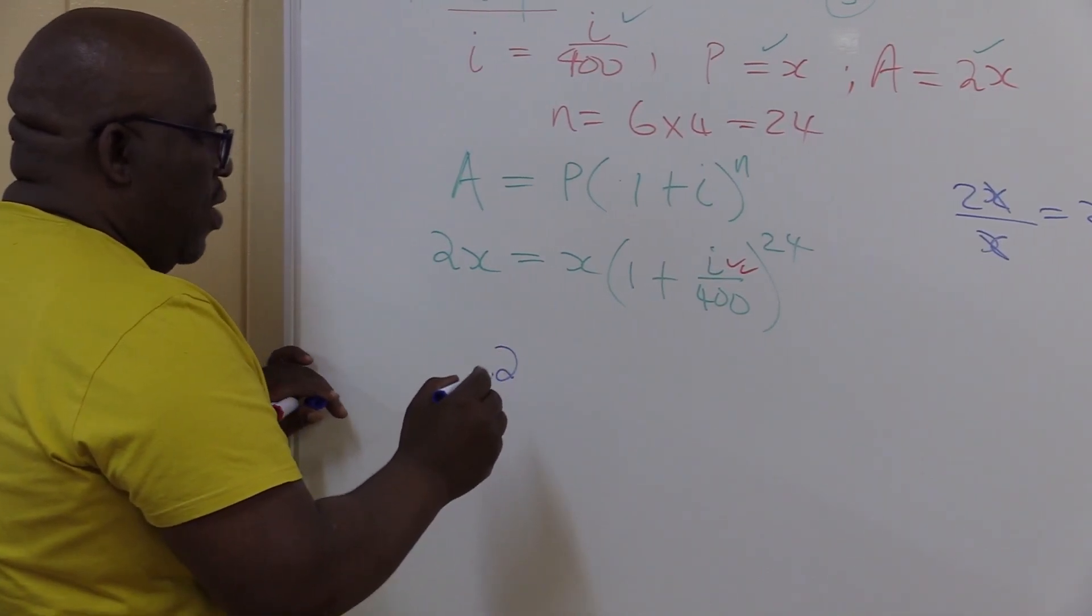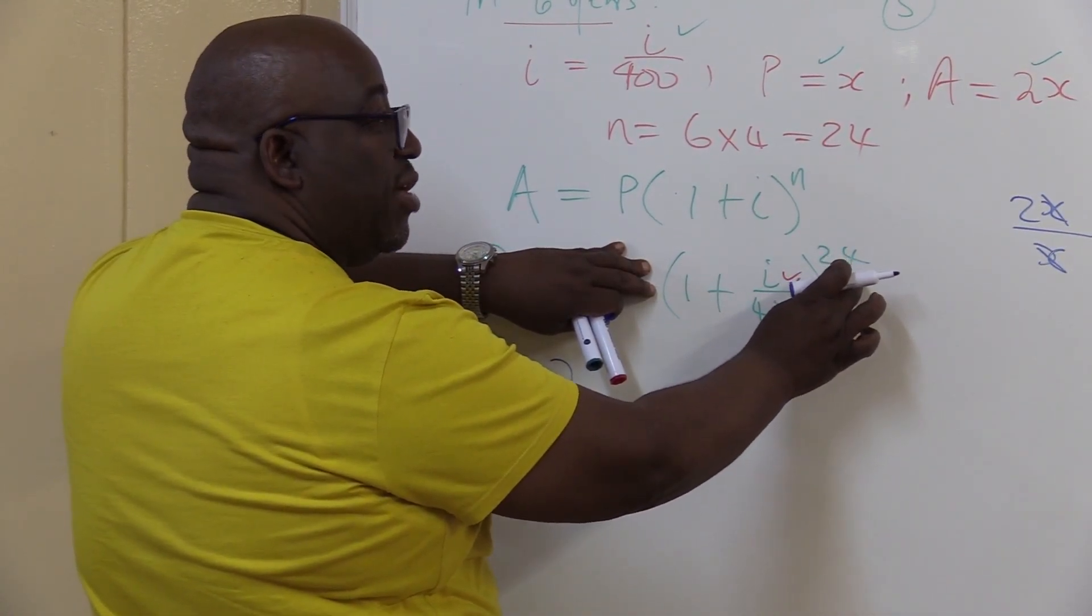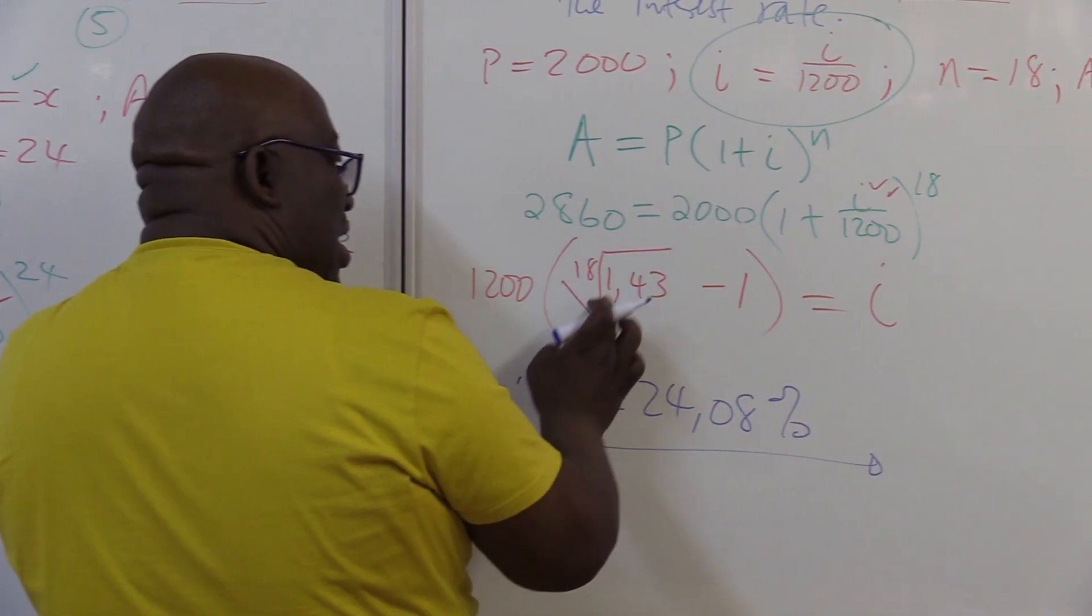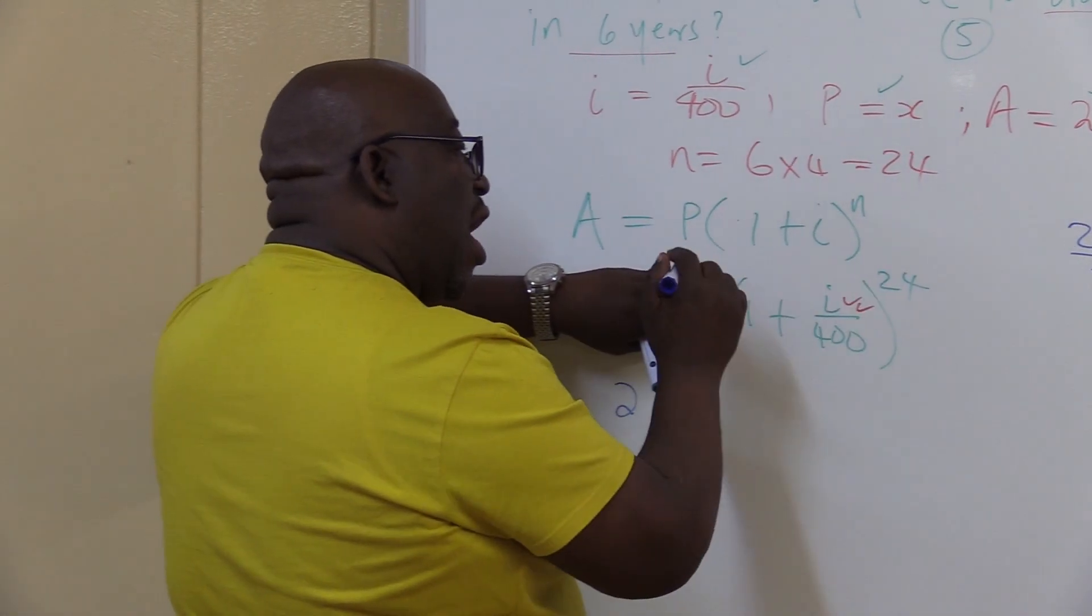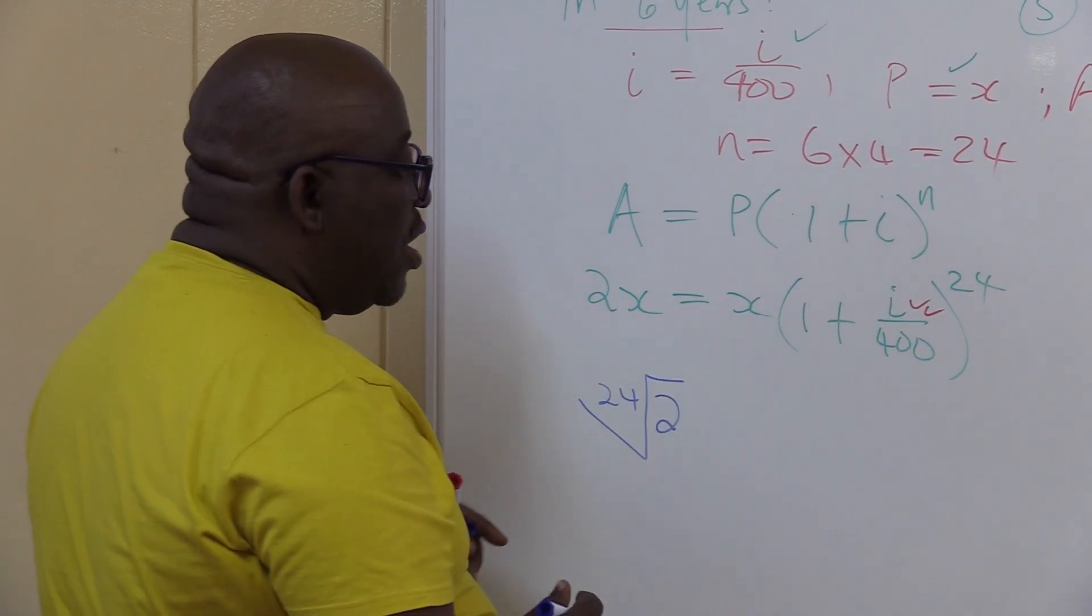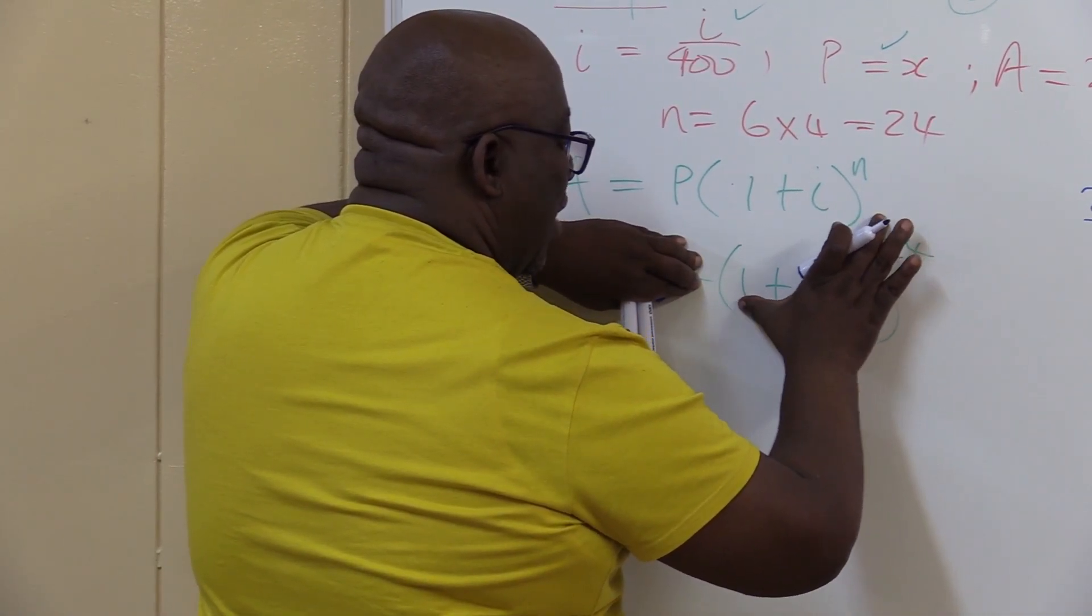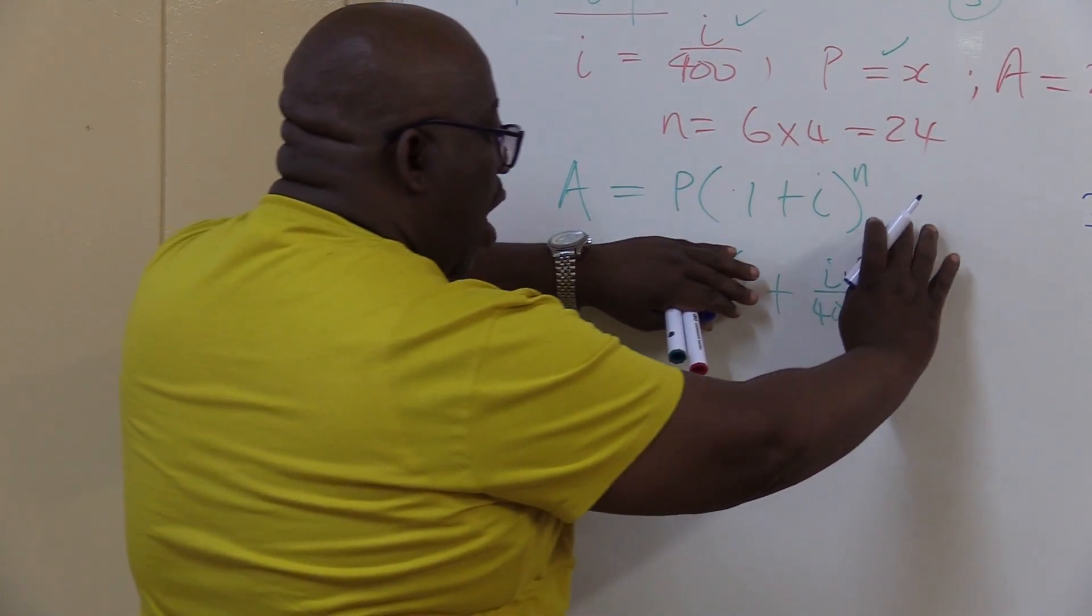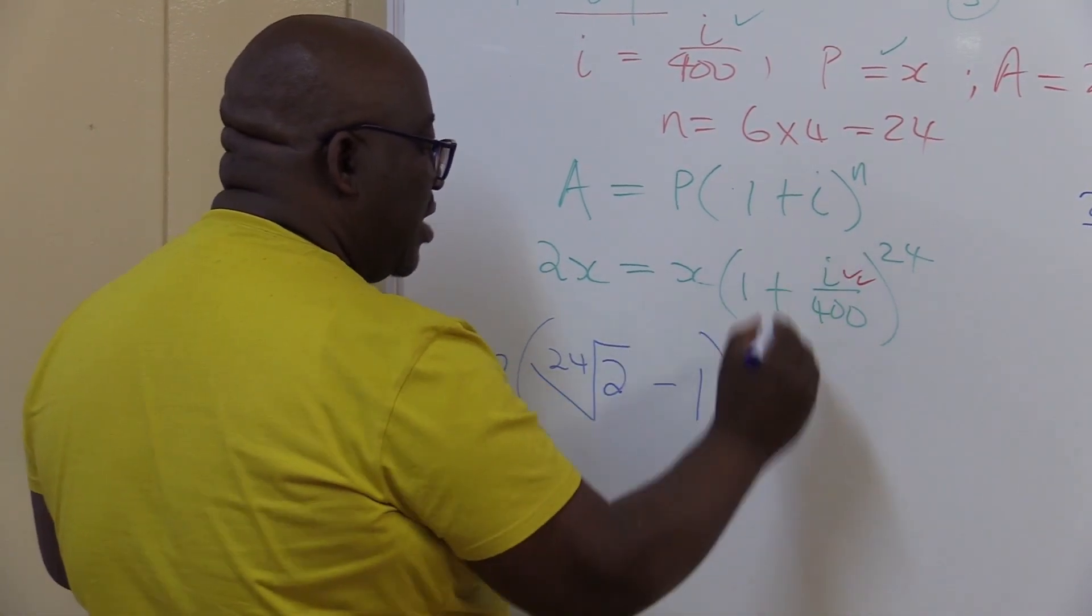Now this x is gone. What is the next thing to remove? It is that power 24. How do I remove it? It's the same thing - we take the 24th root on both sides. So I put the 24th root here. So that is gone. The one in brackets now, what is the next thing to remove? It is one. Transpose to the other side, it will be minus one. Now I'm left with i over 400. How do I get rid of this 400? I multiply by 400 on both sides. I've managed to isolate my i.